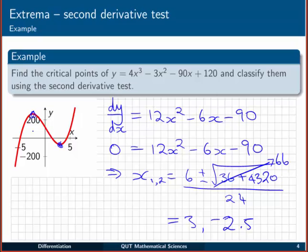Again, that corresponds with what we see in the picture. So we've found our critical points for that function and classified them according to the second derivative test.